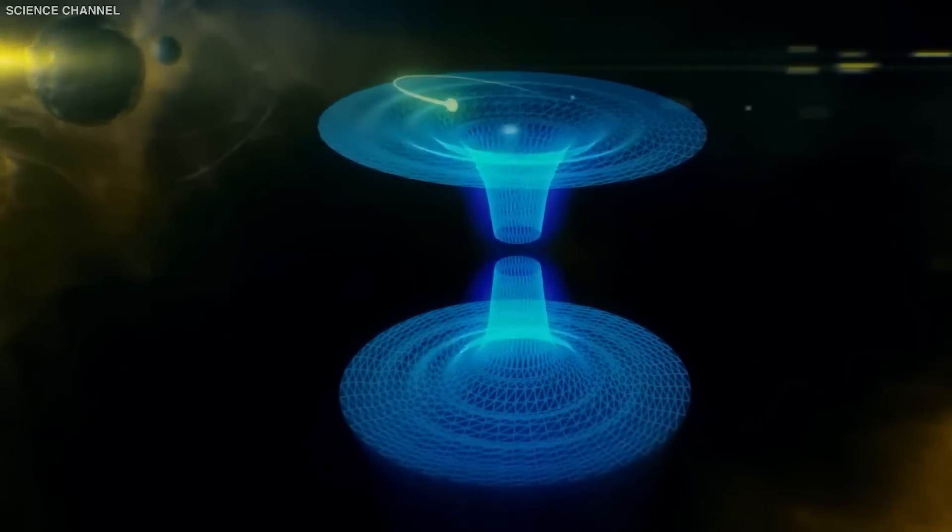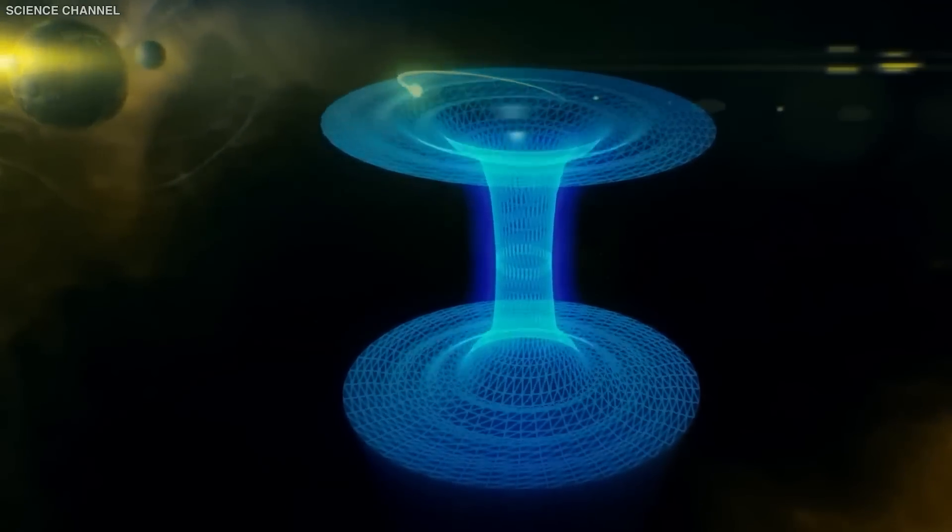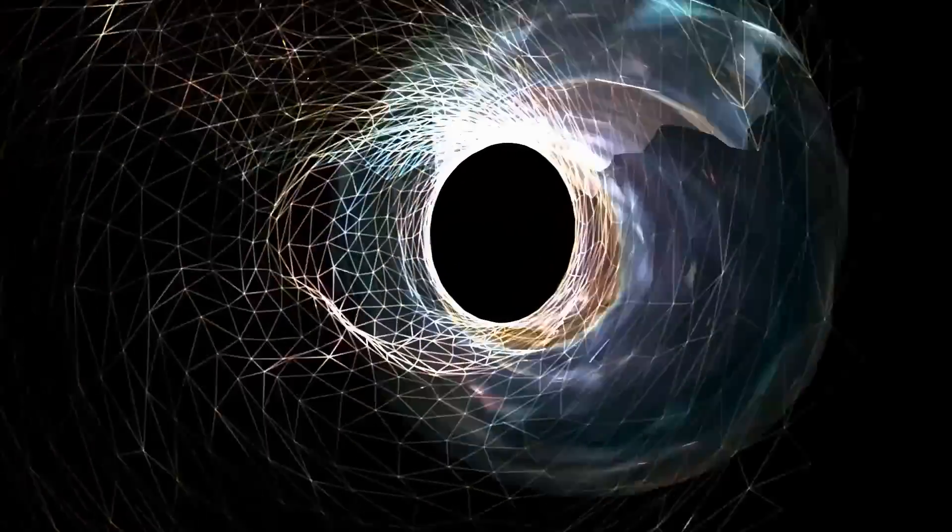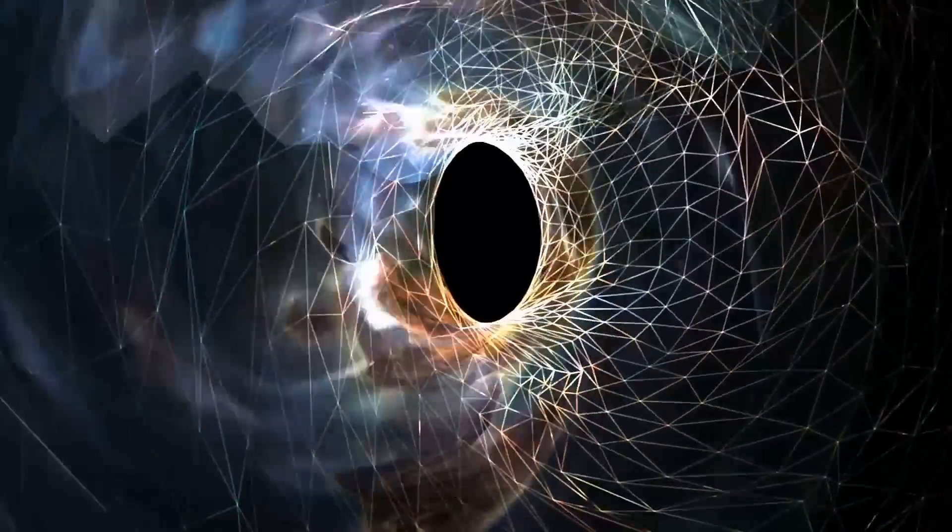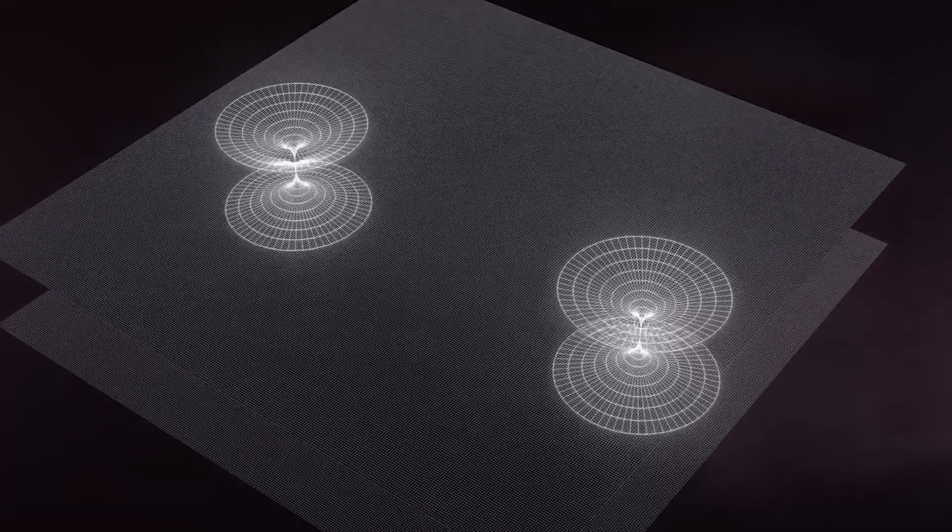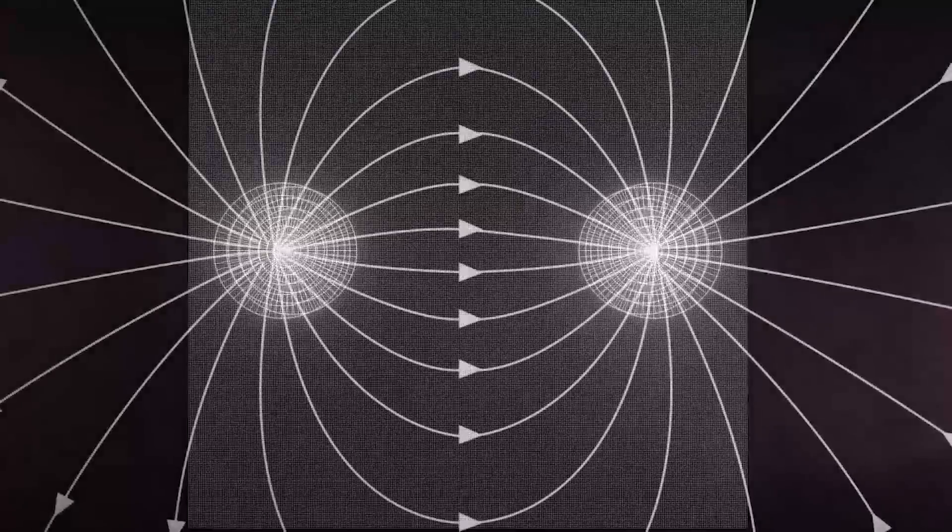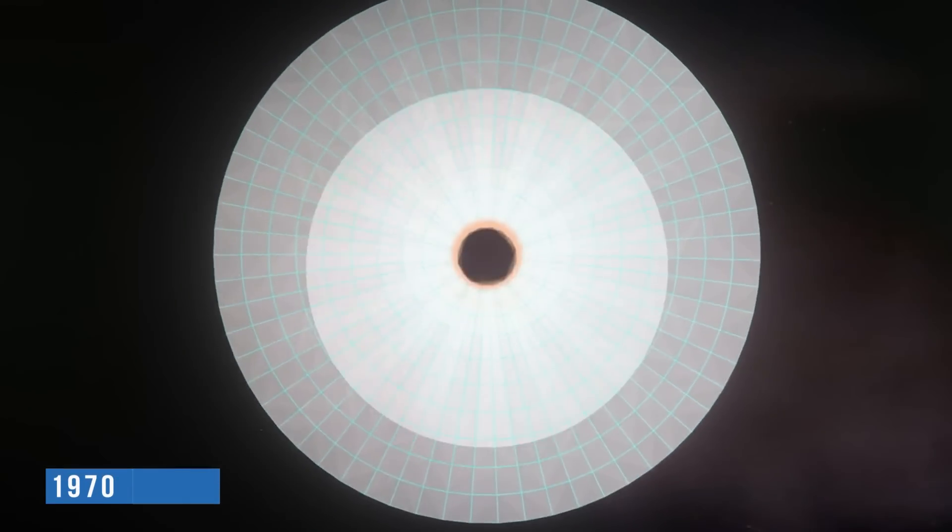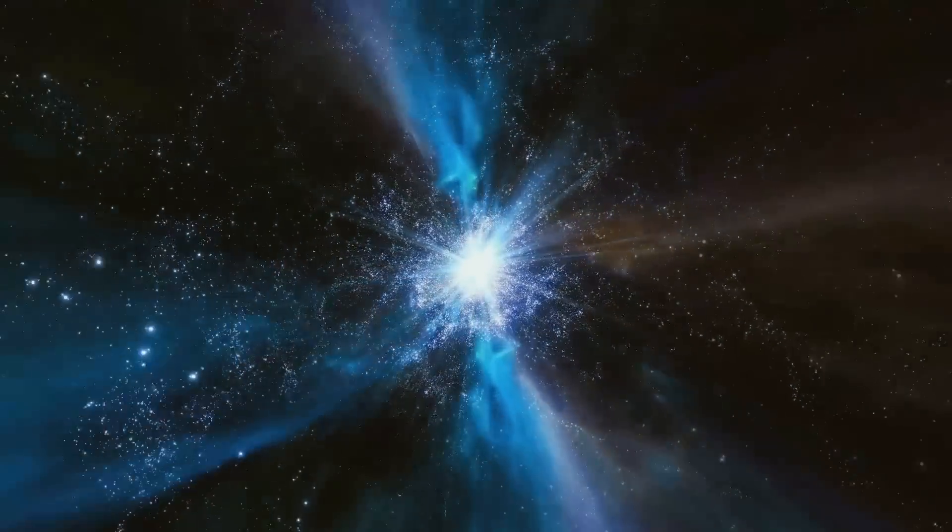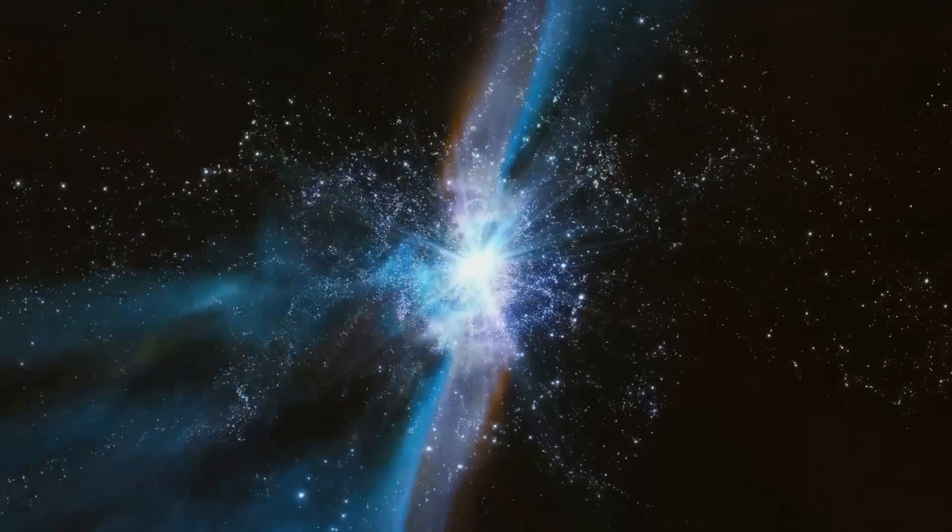But scientists have recently discovered how to create a wormhole that is both stable and traversable, so there is hope that you can escape with just a few simple equations. Scientists have found that you need exotic matter, or some kind of matter with negative mass, to stabilize a wormhole, a technique discovered in the 1970s, such that passing through it does not cause instant catastrophic collapse.